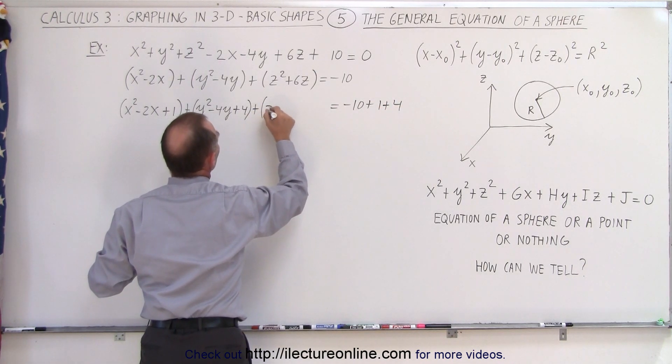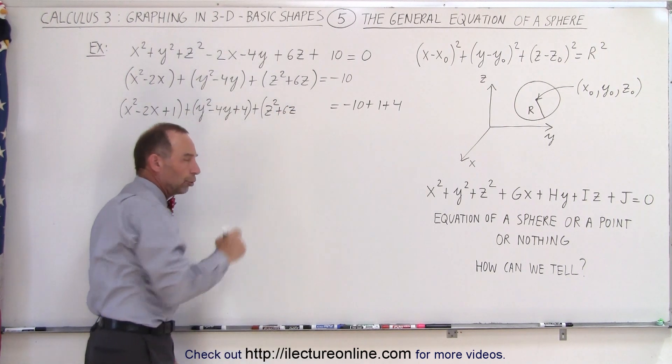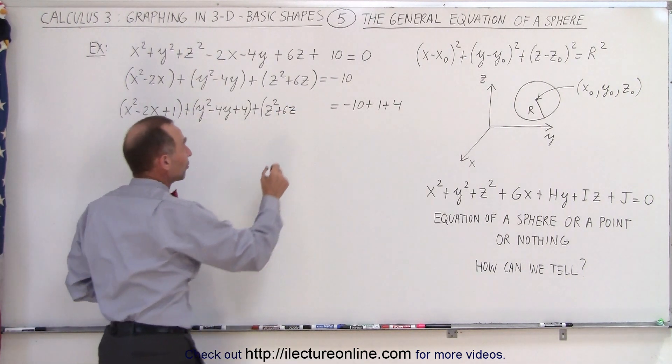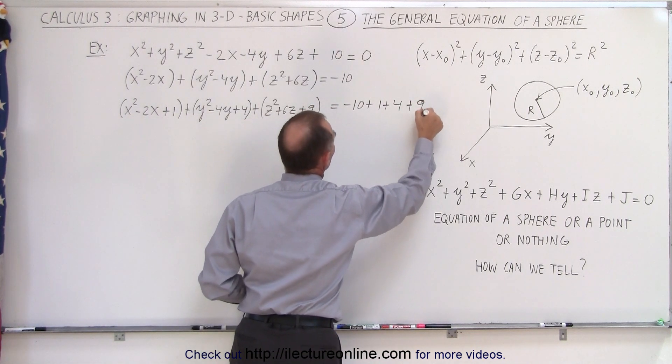And now for the third, here we get z squared plus six z. Take half the middle term, that's three, square that, that gives us nine, so that's plus nine, and then we have to add a plus nine here as well.